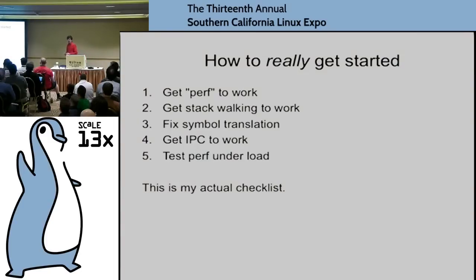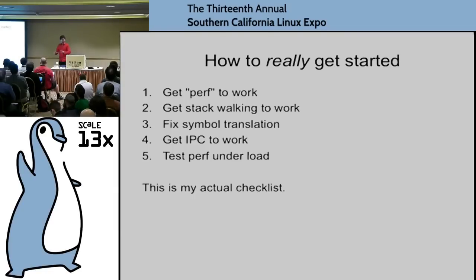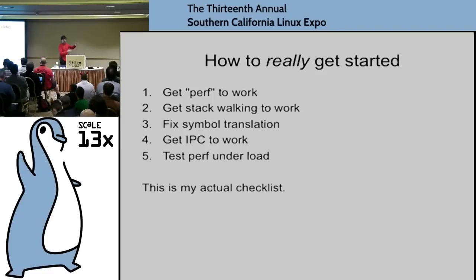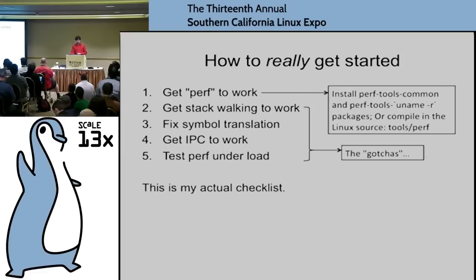Here's my checklist for getting started: step one, get the perf command to work — hit enter, it should work. Then get stack walking to work so stacks look sensible. Then get symbol translation to work so stacks have proper names. Then get IPC to work if you want it. Then test perf under load and you should be good to go for the bulk of CPU-related issues. Getting perf to work is the easy part — it's part of the kernel source and there are packages.